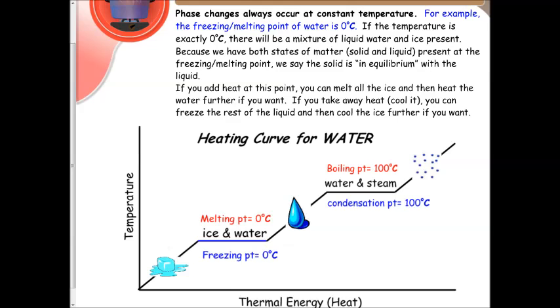Now phase changes always occur at constant temperature. For example, the freezing and melting point of water is zero degrees Celsius. If the temperature is exactly zero, there will be a mixture of liquid and ice present. Because we have both states of matter present at the freezing melting point, we would say that the solid is in equilibrium with the liquid.